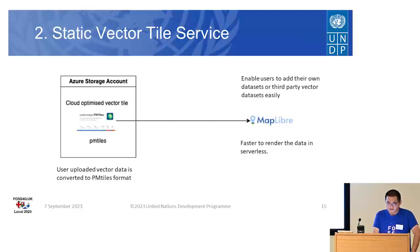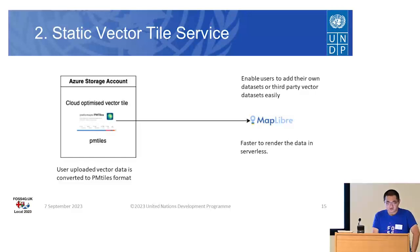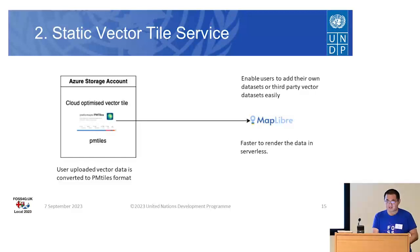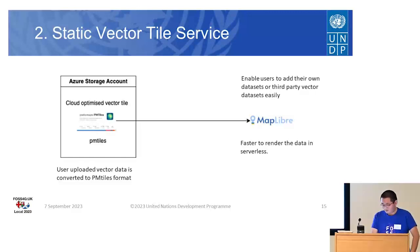For static vector tile services, we use cloud-optimized vector tile datasets with pg-tiles. Users can upload datasets and our data pipeline will convert them to pg-tiles, then use the map library to visualize that dataset.